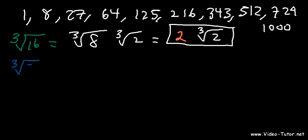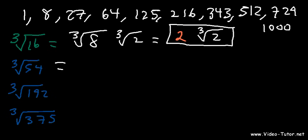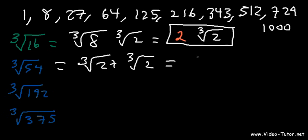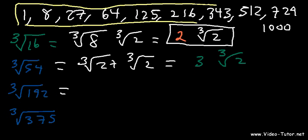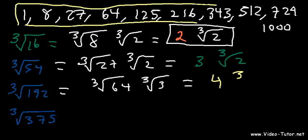Try these examples: the cube root of 54, the cube root of 192, and the cube root of 375. For 54: 27 goes into 54. 27 times 2 is 54, and the cube root of 27 is 3, so this is 3 cube root of 2. For 192: 64 goes in, because 192 divided by 64 is 3. The cube root of 64 is 4, so we get 4 cube root of 3. For 375: 375 divided by 125 is 3, and the cube root of 125 is 5, giving 5 cube root of 3.